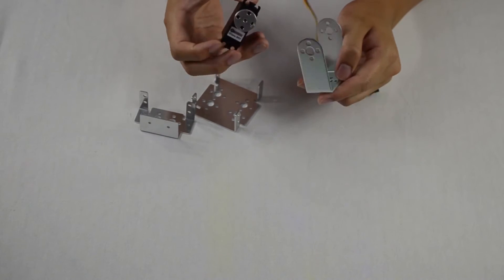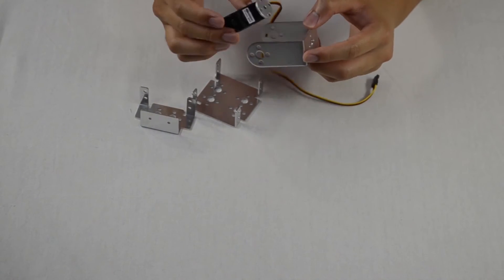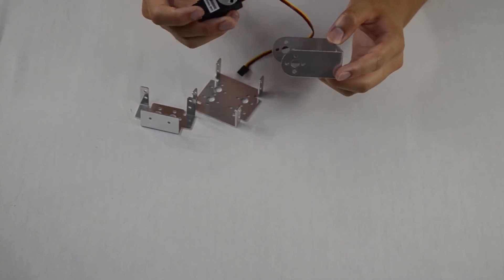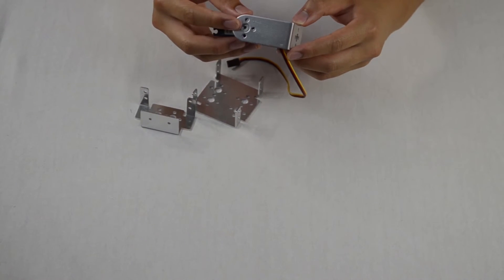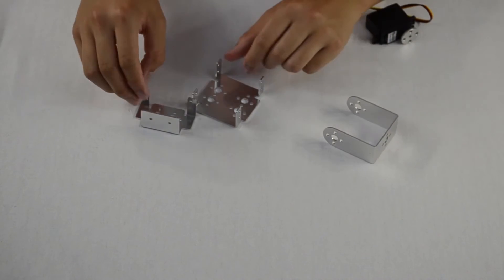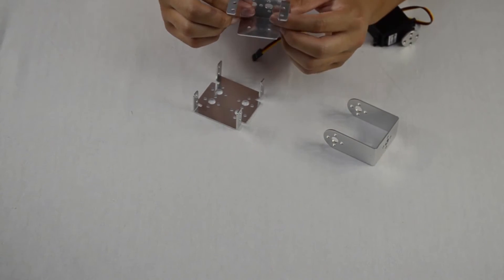And then there is this last one, which is a pivot servo block, which actually has a different fitting and you can actually install it as such and then have it turn.